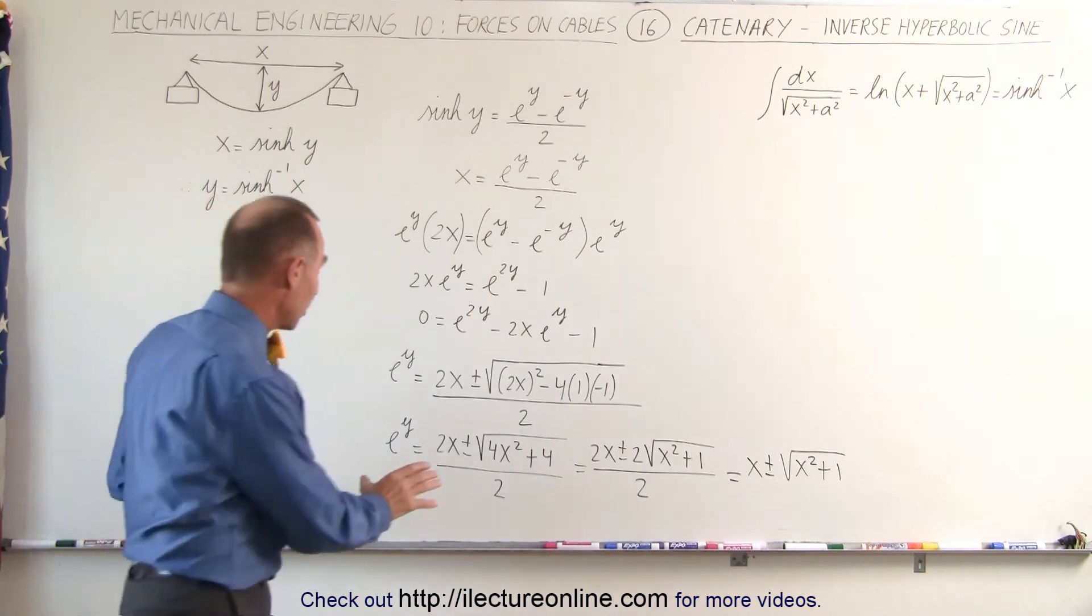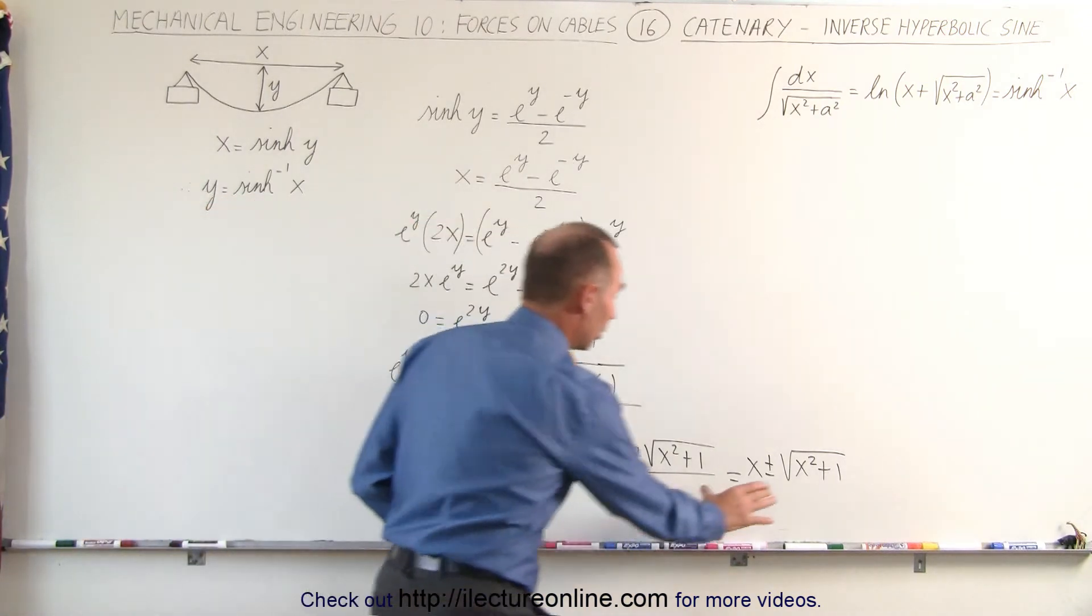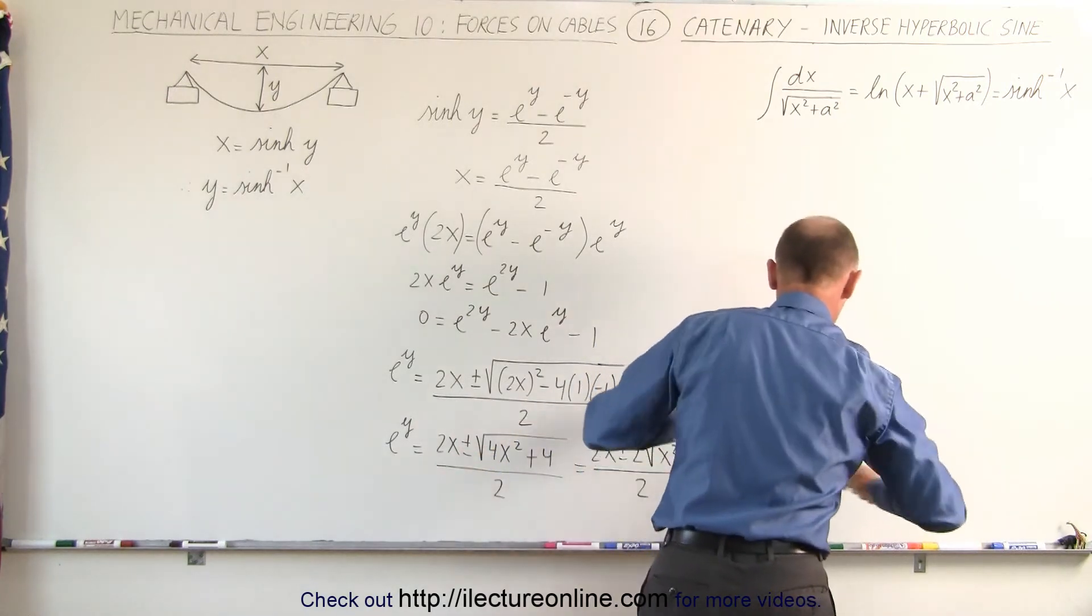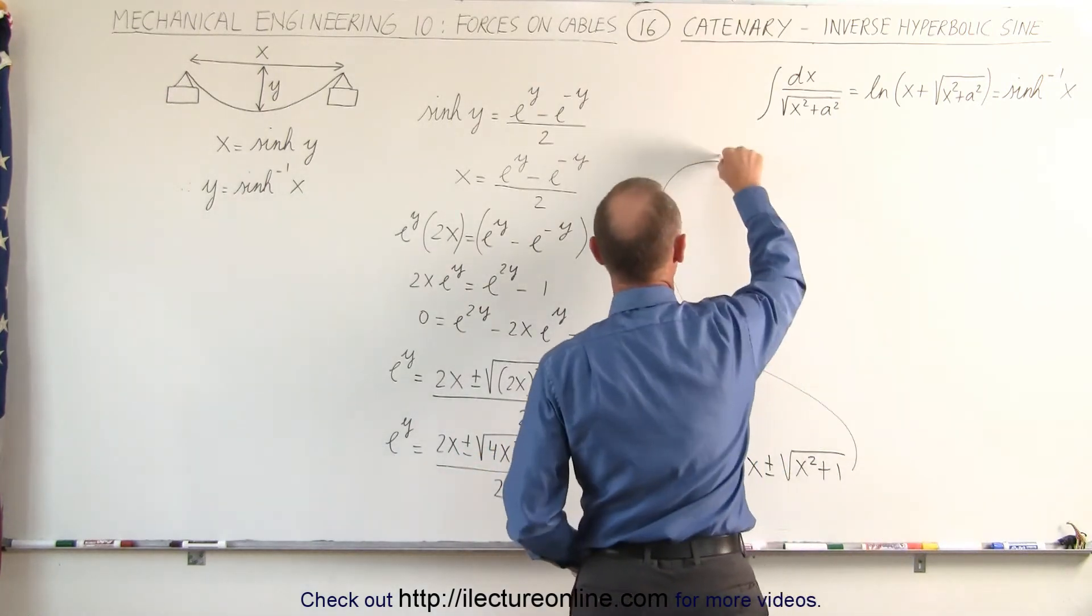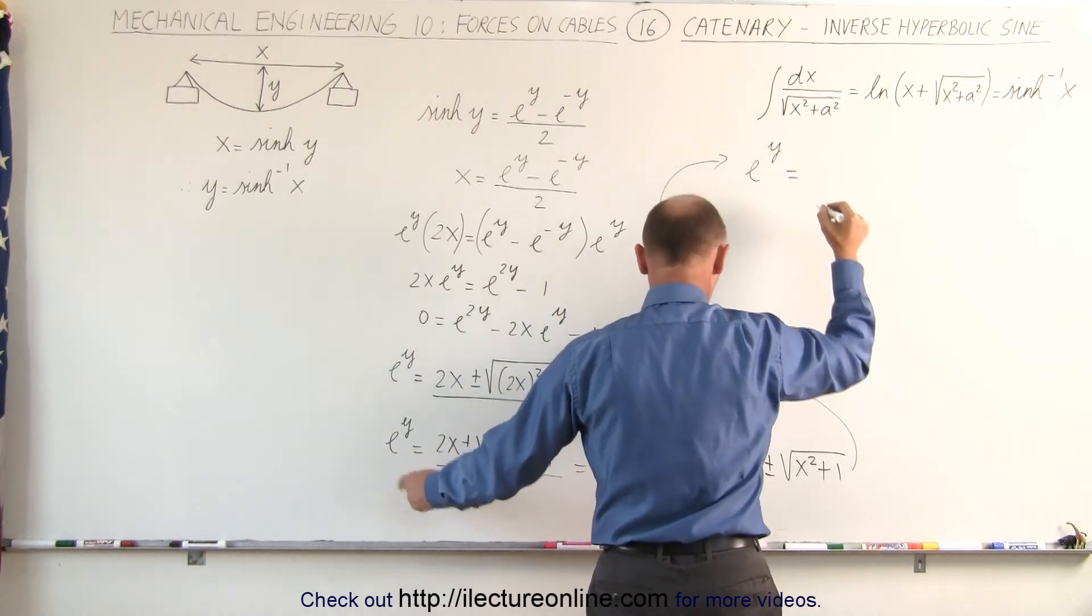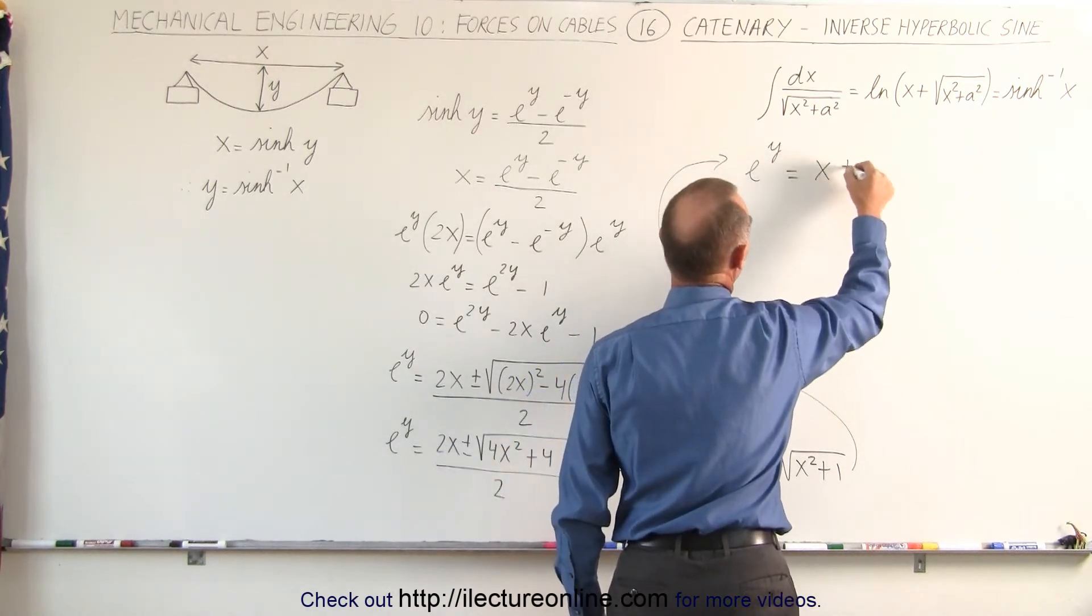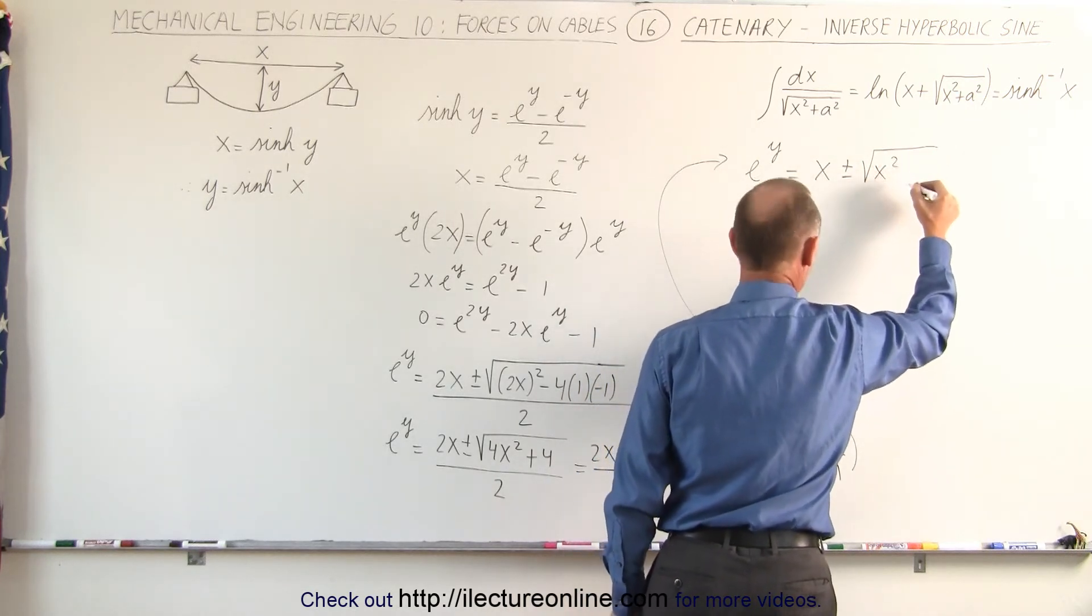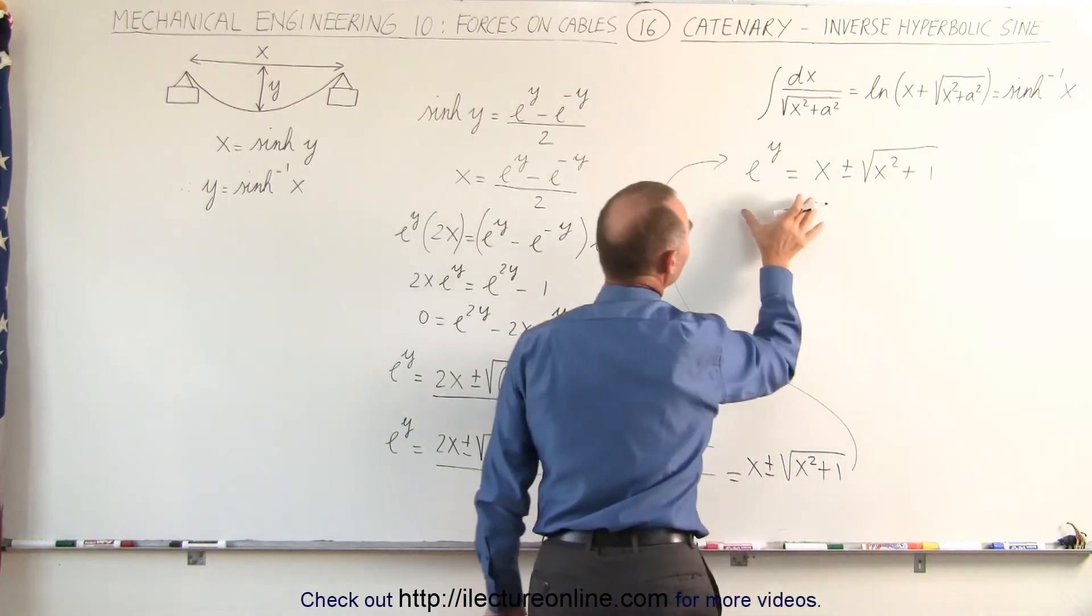Next step, because what we're trying to do is we're trying to make this look like this. So let me move over here. Continue on this side of the board. We had e to the y is equal to x plus or minus the square root of x squared plus 1. We can now take the natural log of both sides.